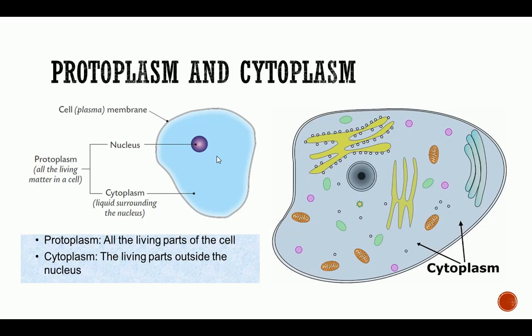Everything within the cell — every organelle, every dissolved substance, every vesicle, and the liquid inside the cell — constitutes the cytoplasm. So the living parts outside the nucleus are called the cytoplasm. The cell wall is also not included in the cytoplasm because it is not a living part of the cell.